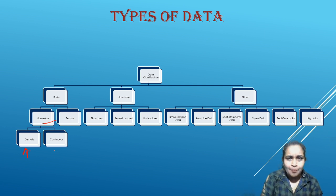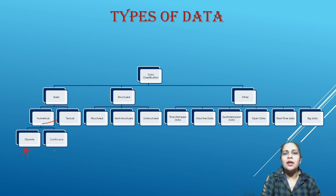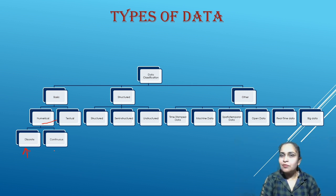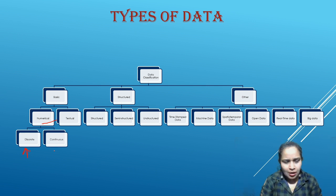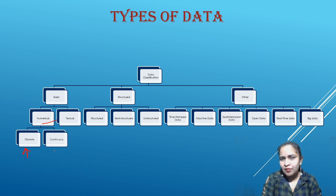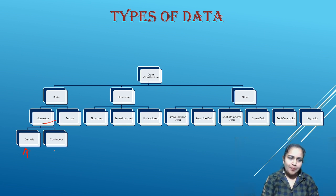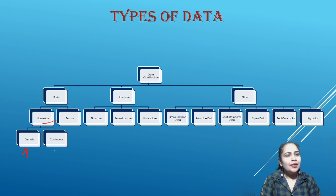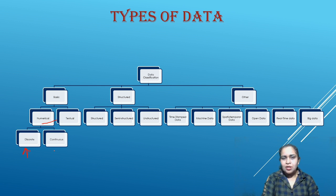Discrete data is data in whole numbers — for example, number of chairs, number of students in a class, or number of employees in a company. It can be 100 or 200, but not 100.5. Continuous data can have decimal values — for example, the weight of a student, the length of cloth, or the distance traveled, which can be 2.5, 3.5, or 6.5 kilometers.